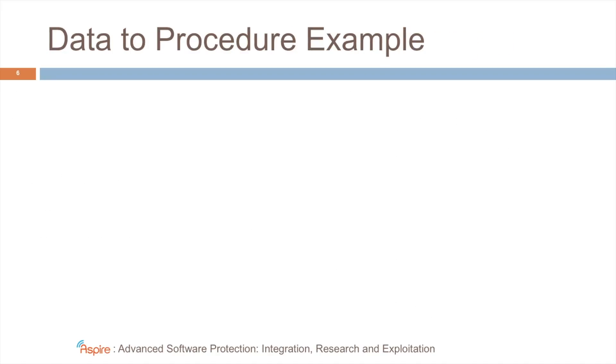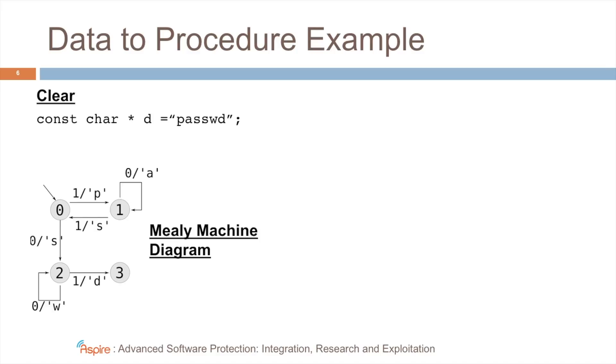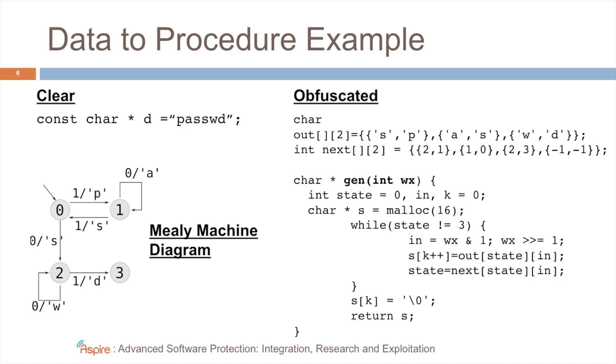For another example of an existing technique that we re-implemented, here we have the conversion of data to a procedure that computes the data. So in the original program, you might have something like this. To remove the string from the program, we will remove the static initialization, and we will replace it with a piece of code that basically implements a Mealy machine. And when given the correct input, the Mealy machine will produce a string password. And so in the obfuscated code, instead of a string, there will be a whole procedure that implements this Mealy machine.